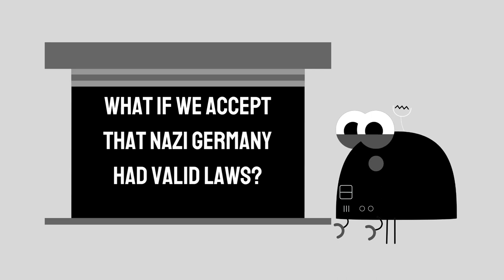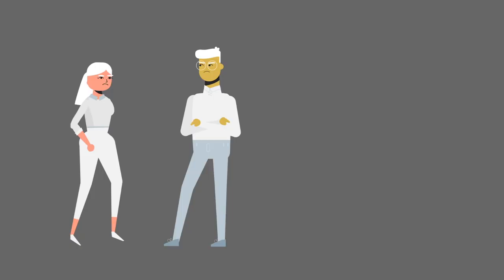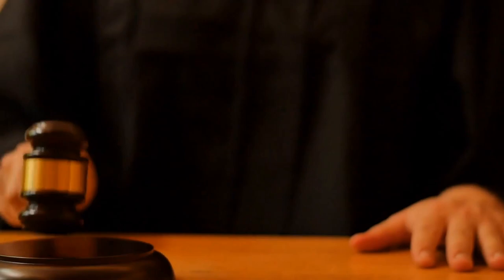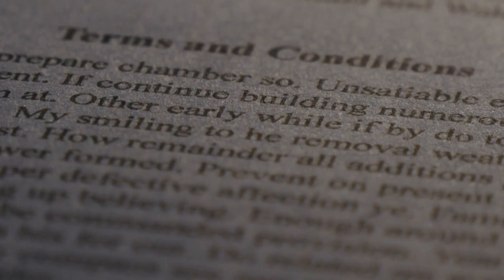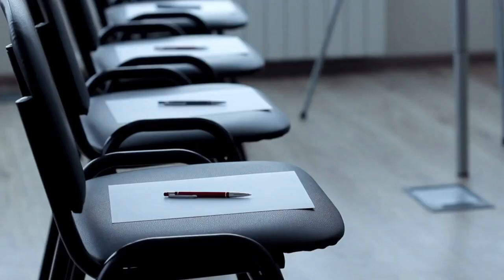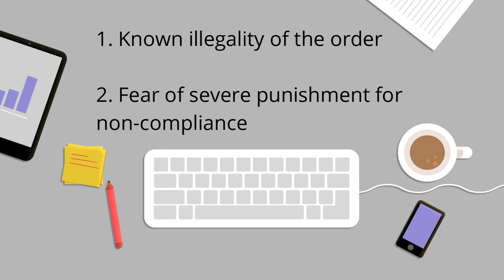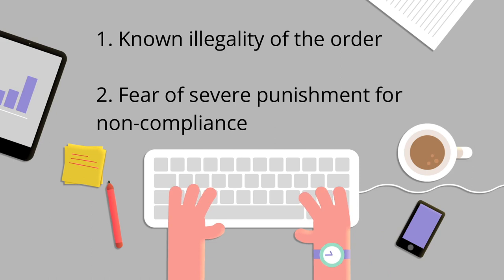What if we accept that they did have valid laws? Well then we need to look at the German defense called the Befehl's Notstand. The defense can be raised when a crime is committed under the order of a superior, and it goes something like this: I knew that the order I got was illegal, but I followed it anyway because I feared severe punishment if I didn't. The people working in extermination camps were following orders. The final solution was an order made by Hitler after the Wannsee Conference. Heinrich Himmler, the leader of the Schutzstaffel — the unit which staffed the extermination camps — then told his people that this order had the force of law because it came from Hitler himself. But technically we're talking about an order, so we need to look at whether or not the following of that order was legal.